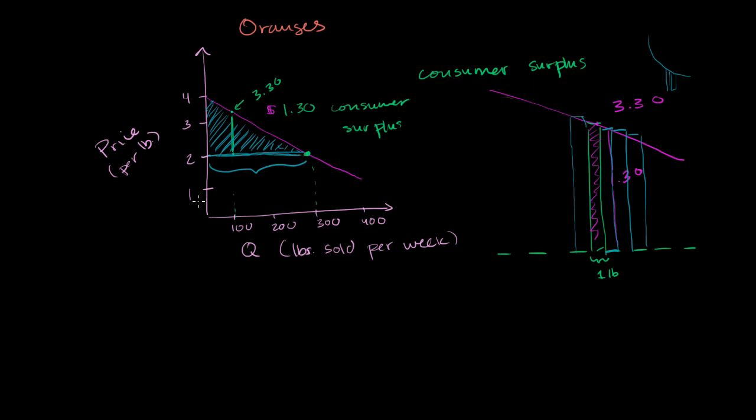So this right over here, you have a base of 300. This length right over here is 300 pounds. And then our height over here. And we can just use this as the area of a triangle because this is a simple linear demand curve. We would actually have to use a little bit of calculus if this was a non-linear curve. But the height here is two.